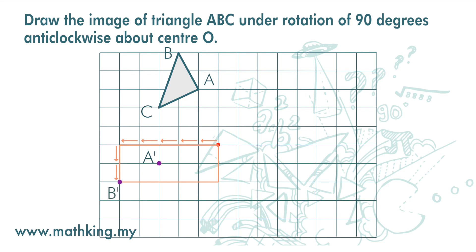Point B prime is here. Next point C. From O, it is 1, 2, and 1, 2, 3.